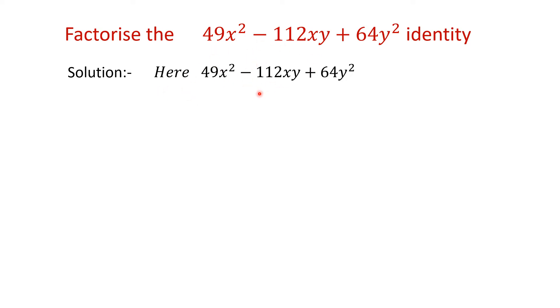Now let's recall the identities. Here this is in the form of x square minus 2xy plus y square. So we all know that this is in the form of x minus y whole square. Now we have to implement that identity and solve.